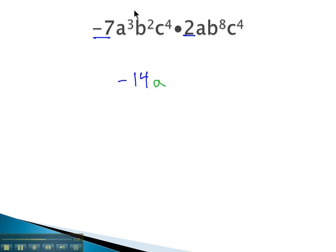And then for the a's, we'll add the exponents. 3 plus 1, if nothing's written, we assume it's a 1, to get a to the 4th.